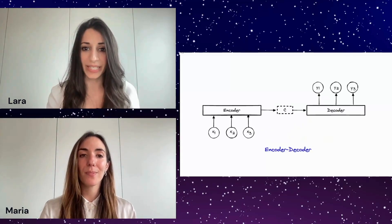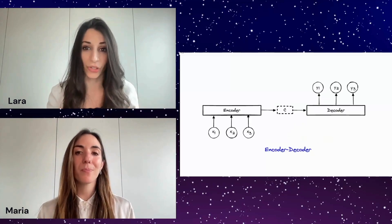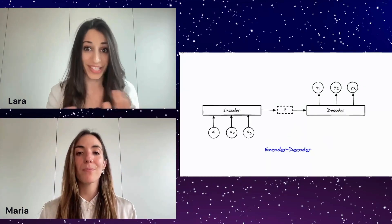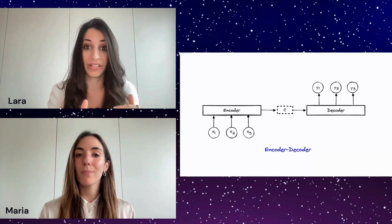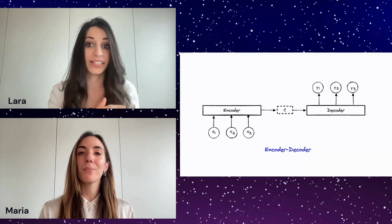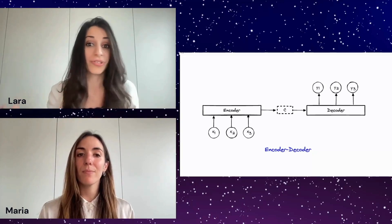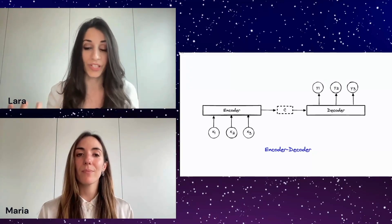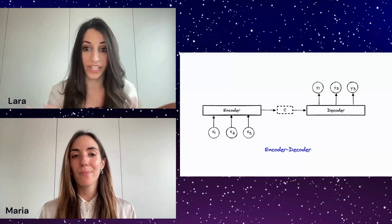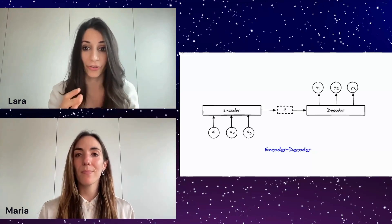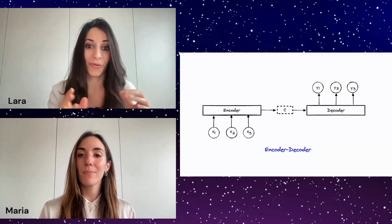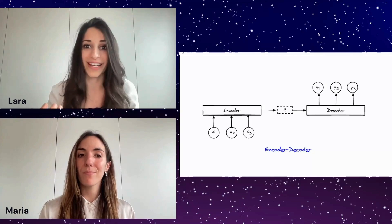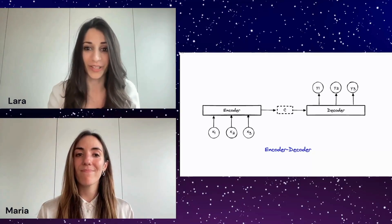So in simple terms, the encoder is going to understand the inputs, and then the decoder is going to use that understanding — that context — to generate whatever the desired output is, whether it's translation or something similar. Together they form a powerful architecture for tasks that involve transforming one type of data into another, like language translation.